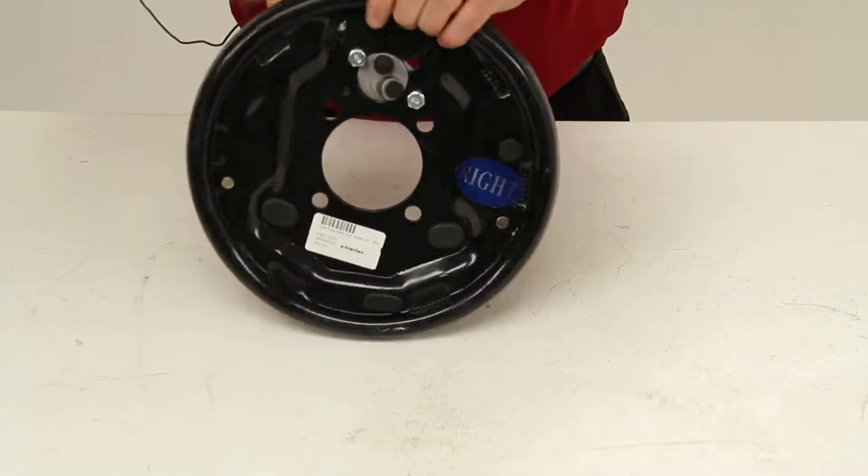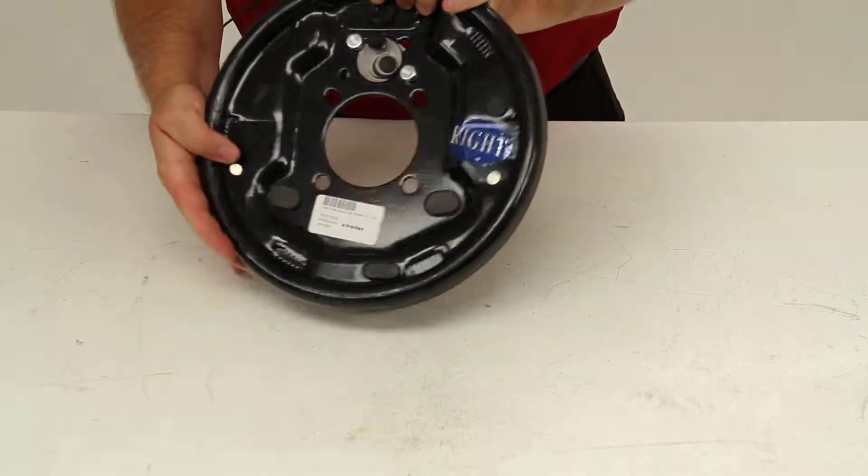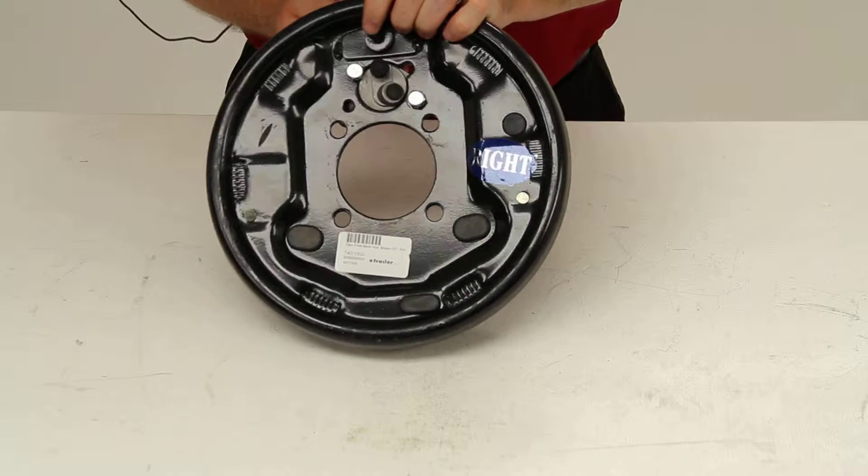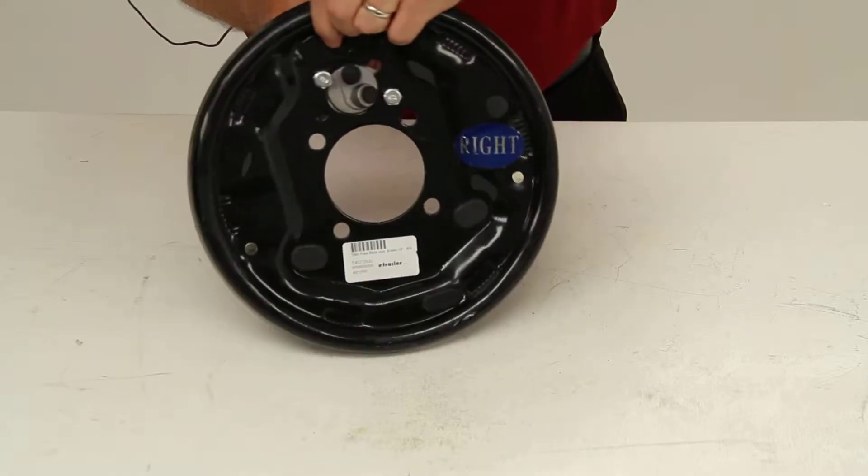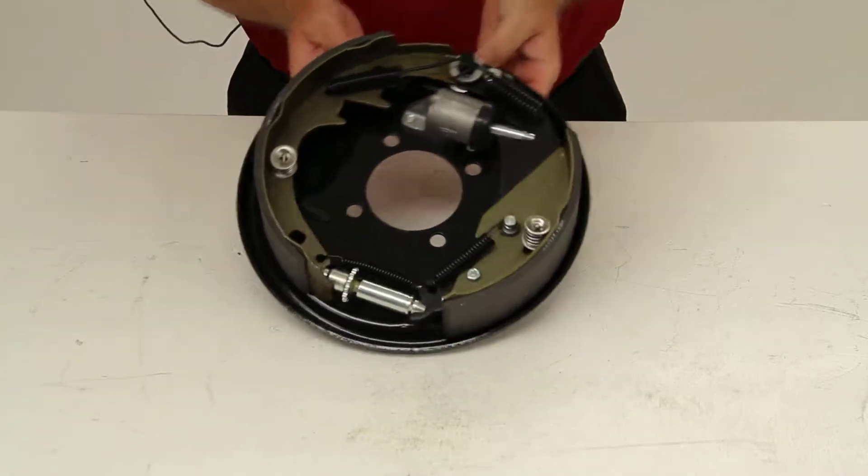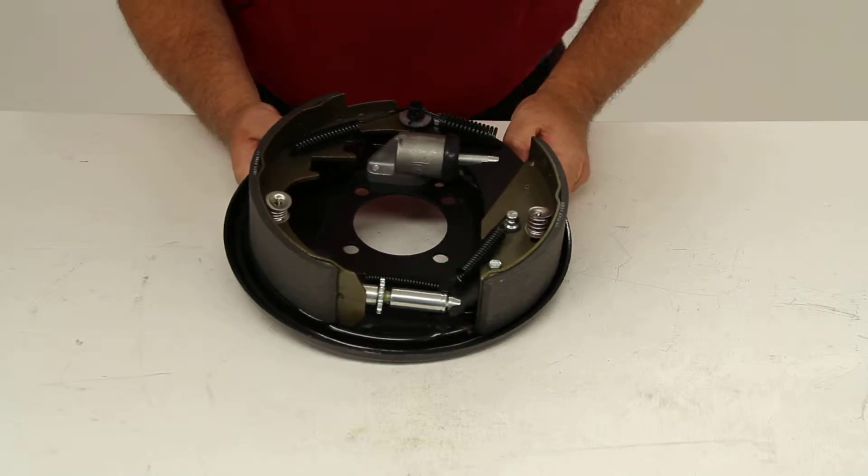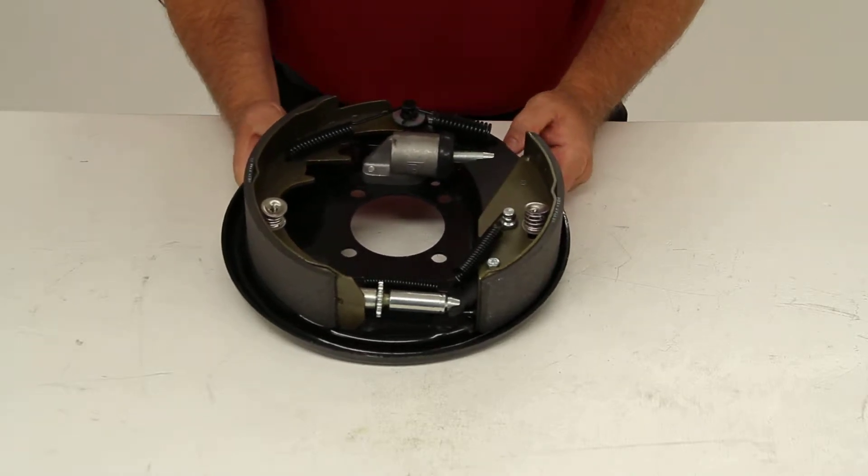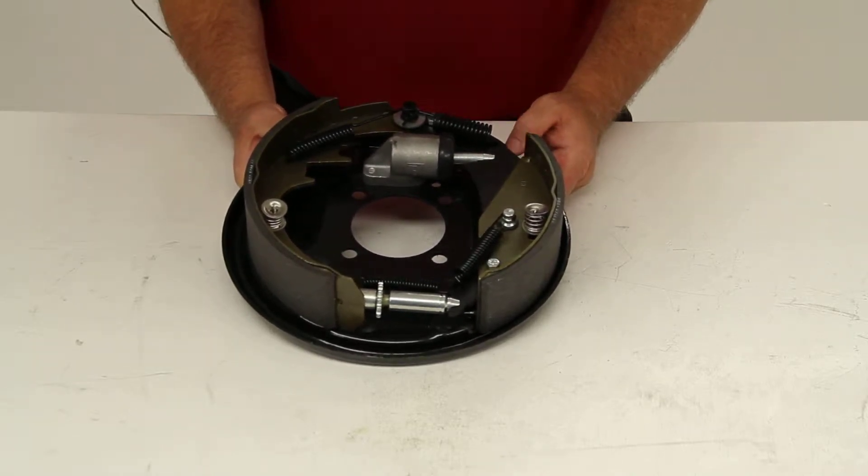This is a black painted drum brake assembly that will let you reverse your trailer without actuating the brakes. It's designed for use with hydraulic brake actuators that do not include reverse lockouts.